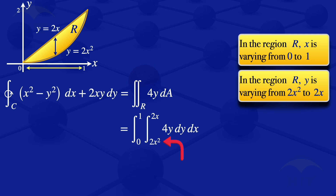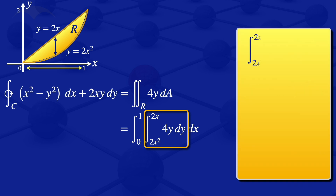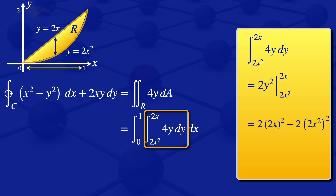I'll evaluate the inner integral first — the one with variable limits. The integral from 2x squared to 2x of 4y dy. Integrating 4y gives 2y squared. Applying the limits from 2x squared to 2x gives 2 times (2x) squared minus 2 times (2x squared) squared, which simplifies to 8x squared minus 8x to the power of 4.